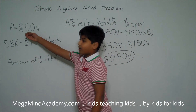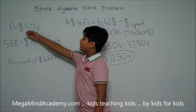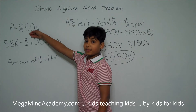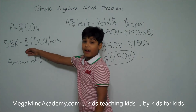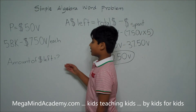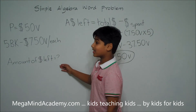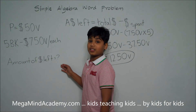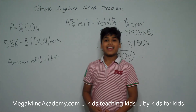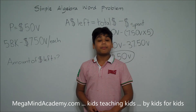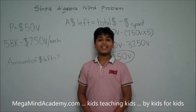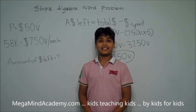So we know that Peter has 50 V dollars and he bought five books for seven and a half V dollars each, so he has 12 and a half V dollars left. Today we learned about simple algebra word problems. Thank you for watching this video.